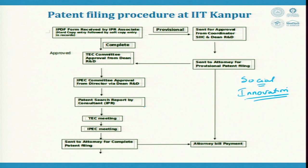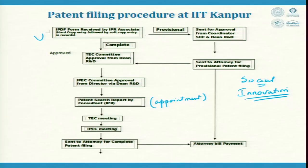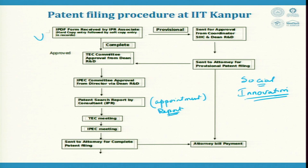The consultant at IIT Kanpur gets the document and searches independently, because something may have been missed during preparation. The committee then looks at business viability, the specific claims, and other aspects. The consultant searches using keywords, sentences, and similarity index, then generates a report. This is reviewed in a meeting to confirm merit, after which it is sent to the attorney for complete patent filing.